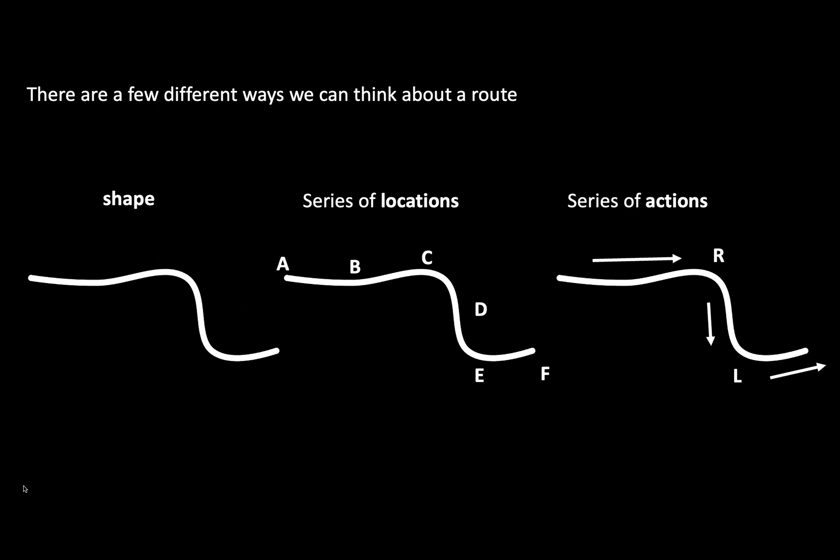We will focus on the parietal cortex today, mainly because about 50% of its neurons respond to navigational actions. This is true for rodents, humans, and monkeys. Routes can take many different forms — we can think about a route by its shape, or by a series of locations such as point A, B, C, or a series of actions such as going straight, making a right turn, or making a left turn. Parietal cortex neurons are able to map our location on routes based on directional actions, such as linear speed and angular speed.